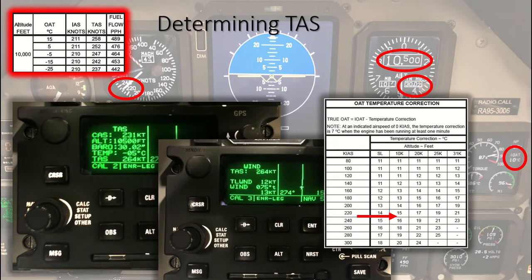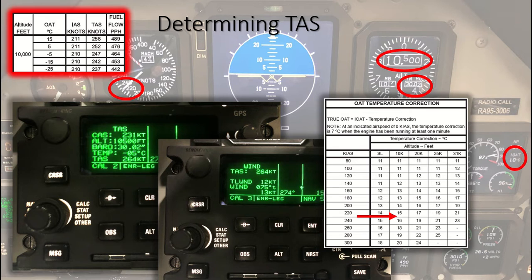If you are curious what your actual true airspeed is while airborne, use the GPS calc 2 and calc 3 pages. On calc page 2, manually input your indicated airspeed as your calibrated airspeed. Next, input your cruise altitude, altimeter setting, and outside air temperature — not your indicated OAT. To find your actual outside air temperature, refer to page P8 of your performance section of the abbreviated checklist. Here, the indicated OAT is 10 degrees Celsius, and at 10,000 feet your approximate actual OAT is negative 5 degrees Celsius. True airspeed is now displayed at the bottom of calc 2. If you go to calc 3, you will see true airspeed and winds aloft.